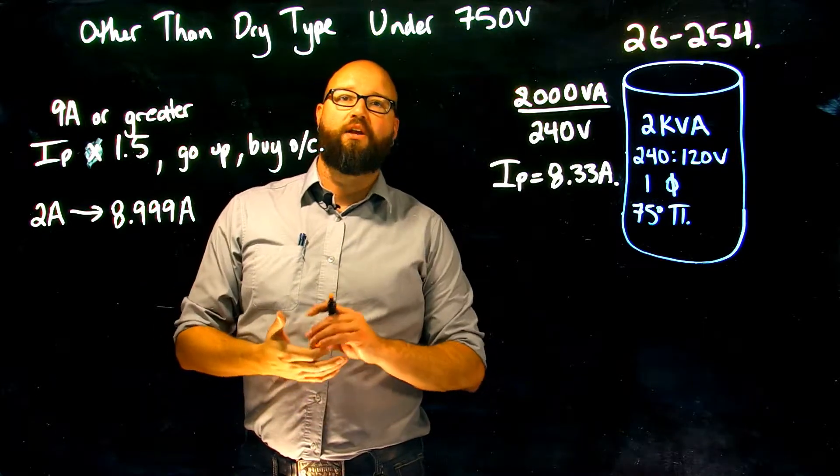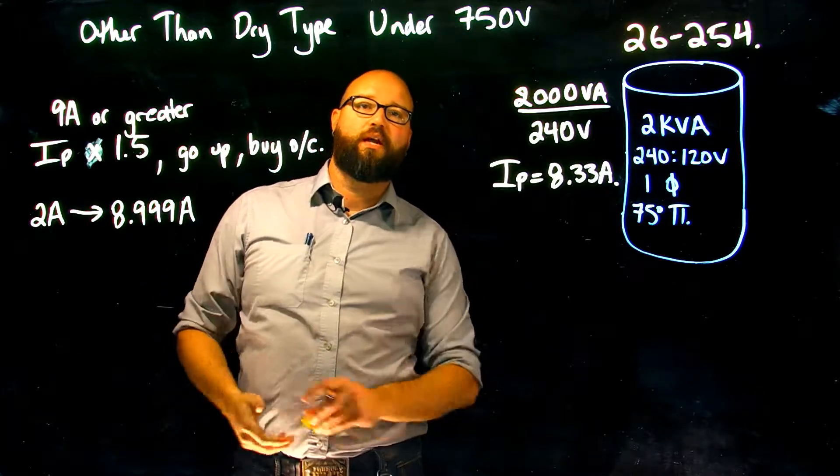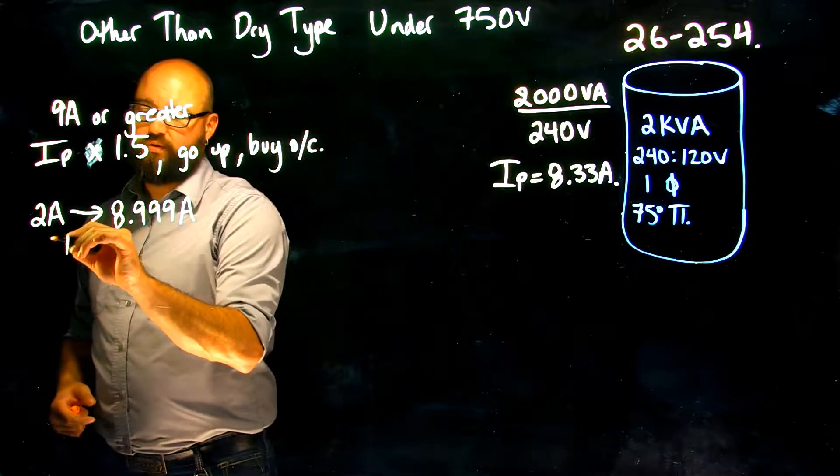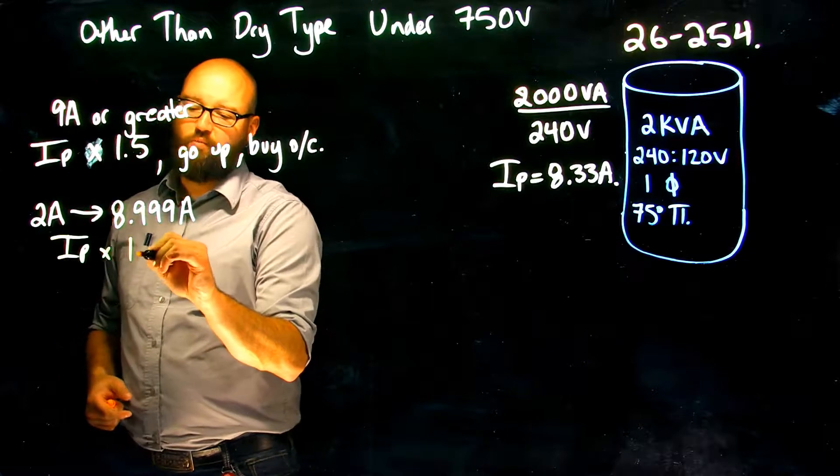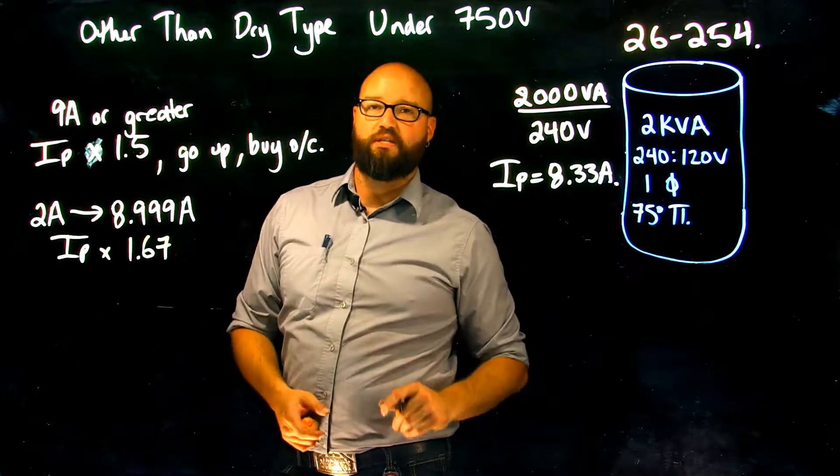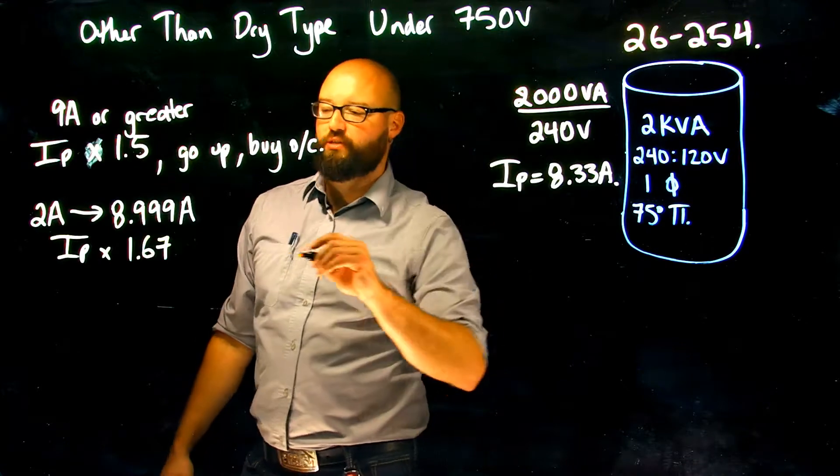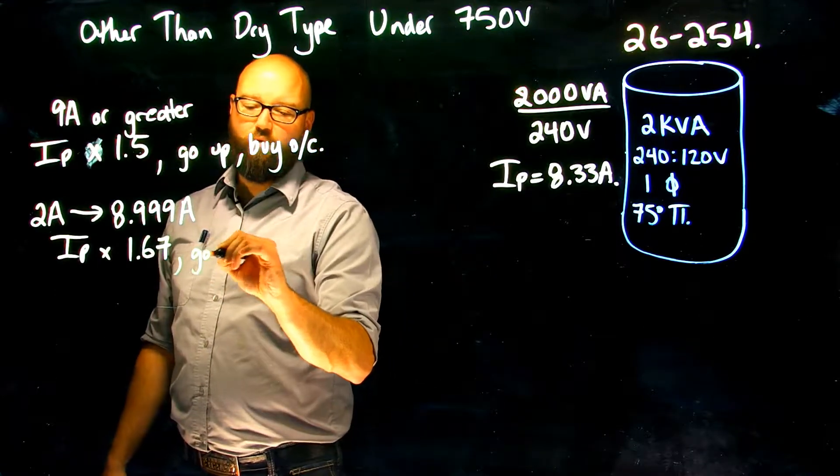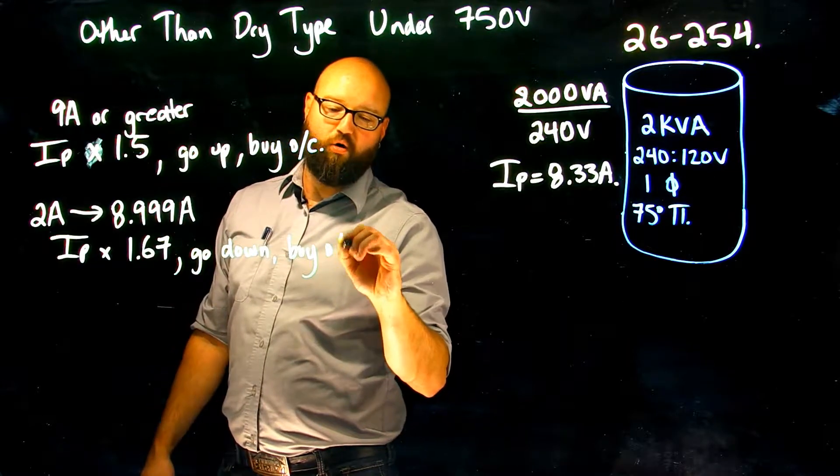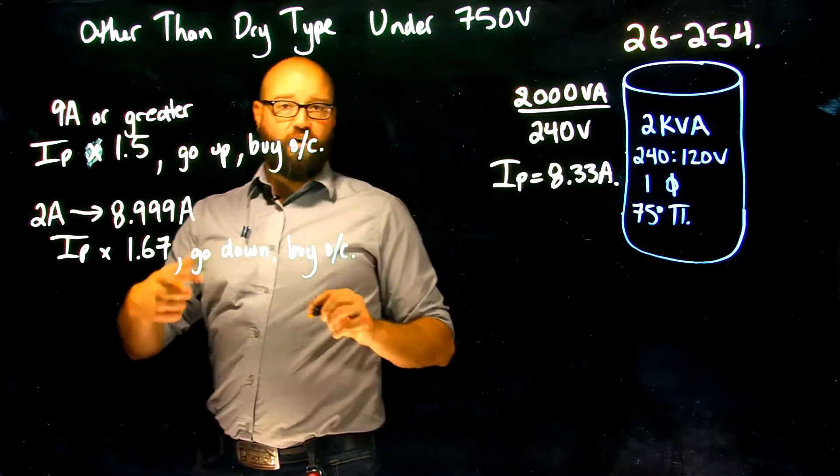So what we would do in this case, we would take our I primary times 1.67, and there are no exceptions to this. It doesn't tell me I'm allowed to go up to the next available size, so we would go down and then we would buy our overcurrent based on that number.